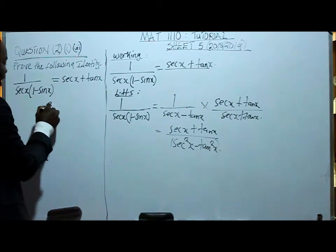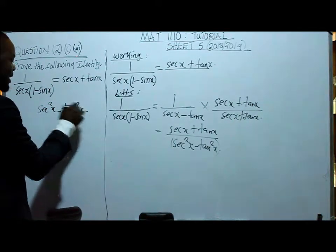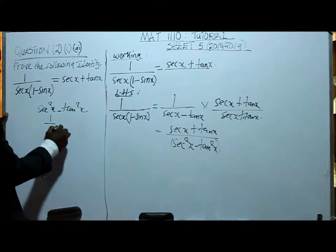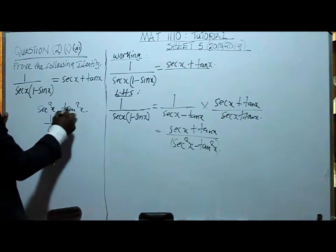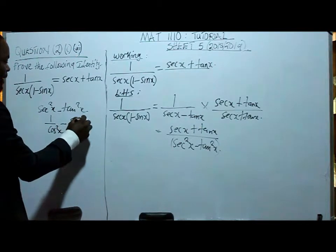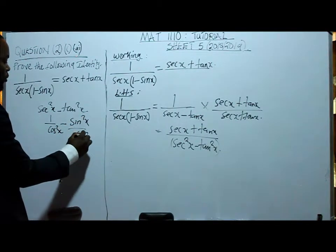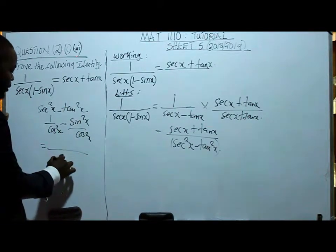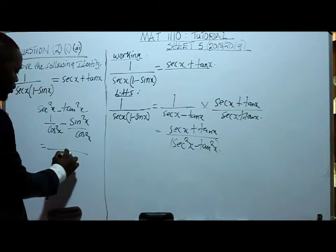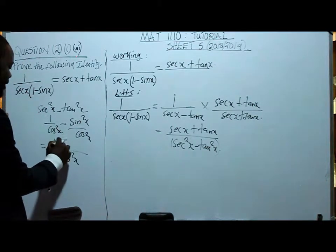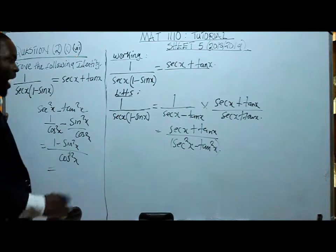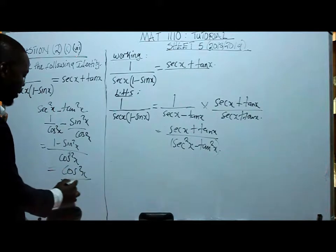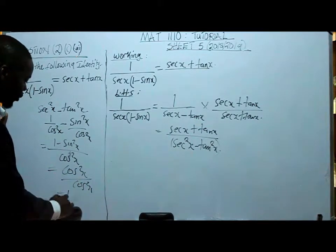We have got sec squared x minus tan squared x. You know that sec squared x is 1 over cos squared x minus tan squared x, which is sin squared x over cos squared x. Simplifying the trigonometric fraction, we have got the lowest common denominator of cos squared x, and then 1 minus sin squared x. With the identities, 1 minus sin squared x is cos squared x over cos squared x, which is one.